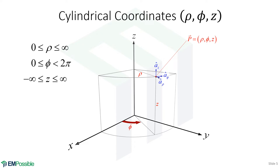We also have unit vectors in cylindrical coordinates. We have the same unit vector Z pointing parallel to the Z axis. Our unit vector A rho will change depending on our position — it's always pointing outward from the Z axis. And then we have our unit vector A phi, which also changes with position. It points tangential to the curve located at a distance rho out from the Z axis at angle phi. So as we move our point, A rho and A phi unit vectors actually change direction.